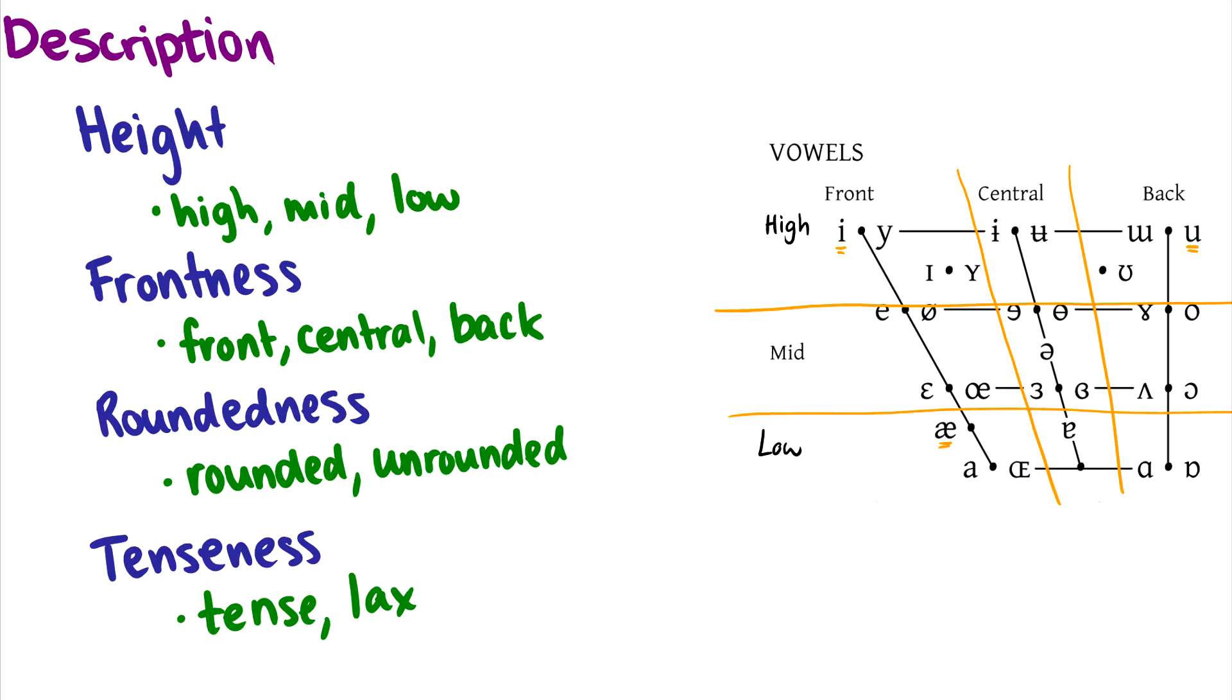The next one is roundedness. Some sounds are rounded, like oo in the top right, and oh right below it. But other sounds like ee, or i, or ah, these are unrounded.